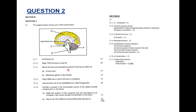Question 2.1.3: name the hormone secreted by the gland below the hypothalamus — we all know that is the pituitary gland. What hormone does the pituitary gland secrete that has an effect on long bones? That should be growth hormone, because that is what makes long bones grow. What hormone affects the mammary glands in the breast? We know the mammary glands secrete milk through lactation, and the hormone is prolactin.